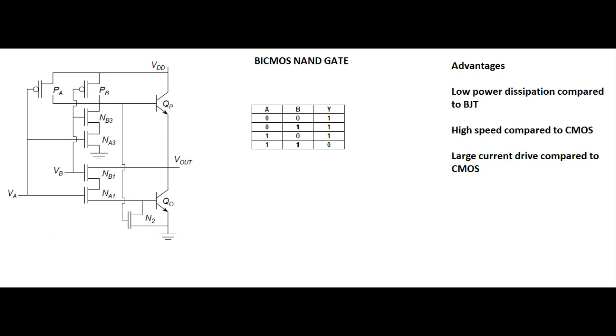Like you can see here, I have listed out the advantages of BiCMOS gate. It has low power dissipation compared to BJT, high speed compared to CMOS, and large current drive compared to CMOS.